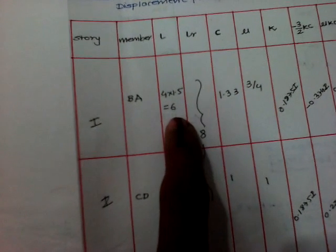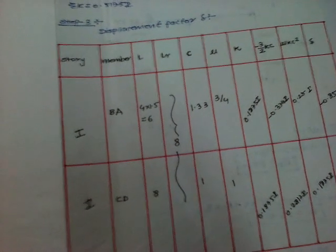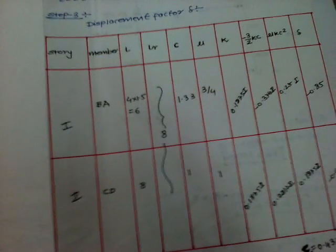Now what is L_R? L_R is this value, the biggest value in L, it is L_R. C for a hinge portion we are getting the 1.3 and for a fixed portion we are considering C as 1. Mu we are considering 3 by 4 for hinge portion and 1 for the fixed.